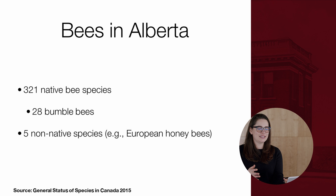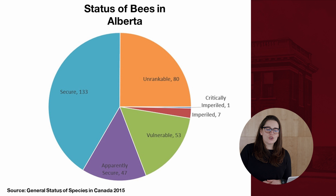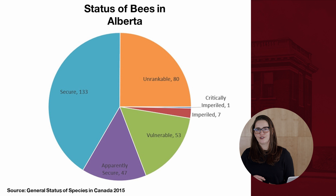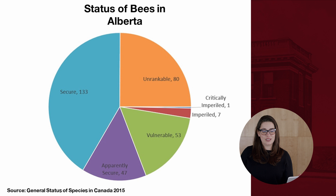We also have five non-native species on record, including the European honeybee. Every five years, the federal government compiles the Wild Species Status Report, assigning conservation rankings. In Alberta, about 50% of our 321 native bee species are secure or apparently secure, about a quarter are data deficient — we simply don't know enough about them — and about another quarter are either rare or declining. That other 50% is problematic.